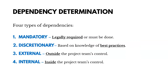There are four types of dependencies. Mandatory dependencies are legally required or inherent in the nature of the work. Discretionary dependencies are based on best practices — they're a good idea. External dependencies are outside the control of the project team, and internal dependencies are inside their control. A dependency can be one of the first two and also one of the last two — it doesn't have to be just one.